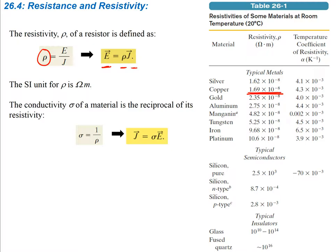You also have the temperature coefficient of resistivity, called alpha, which lets us figure out what the resistivity actually is at a specific temperature, because resistivity changes depending on temperature. The values in the reference table are given at room temperature, about 293 Kelvin. The SI unit for resistivity is ohm times meter.